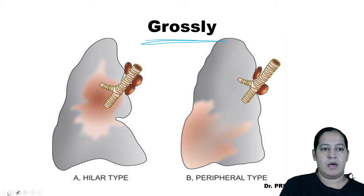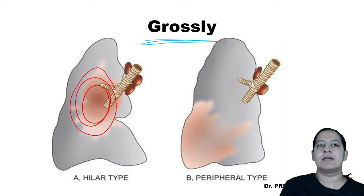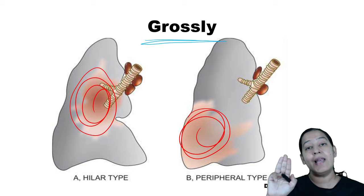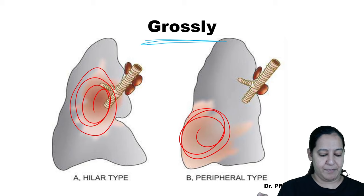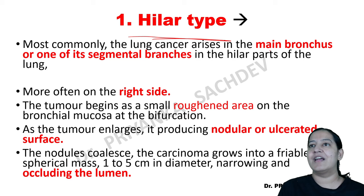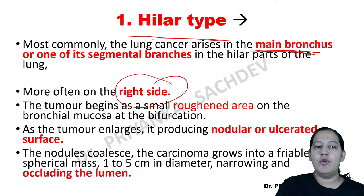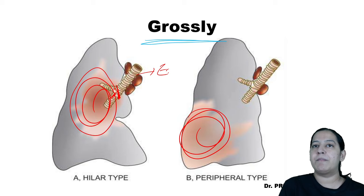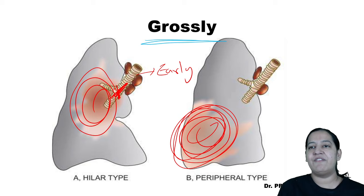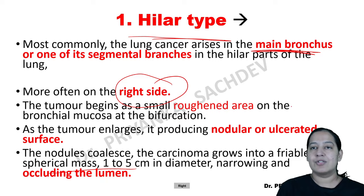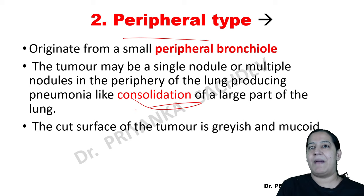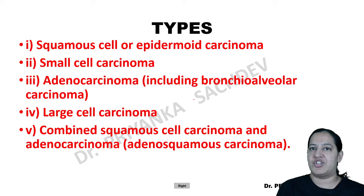In hilar presentation, the tumor is present near the main bronchus. It usually occurs on the right side and will occlude the lumen of the bronchus, causing patients to present early with breathlessness. Peripheral tumors show no bronchial occlusion so they present late — appearing as a consolidation or pneumonia-like patch at the periphery. Central tumors appear as nodular ulceration.